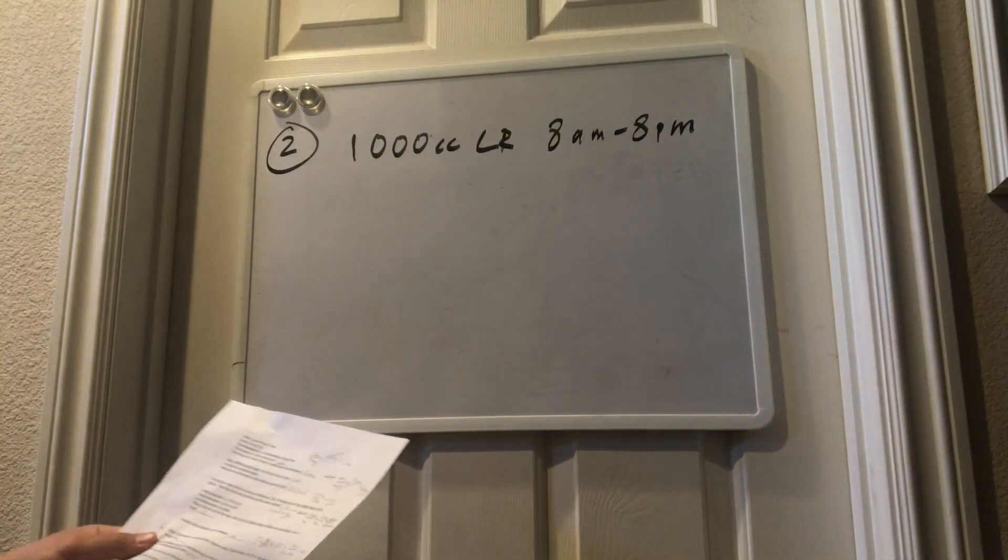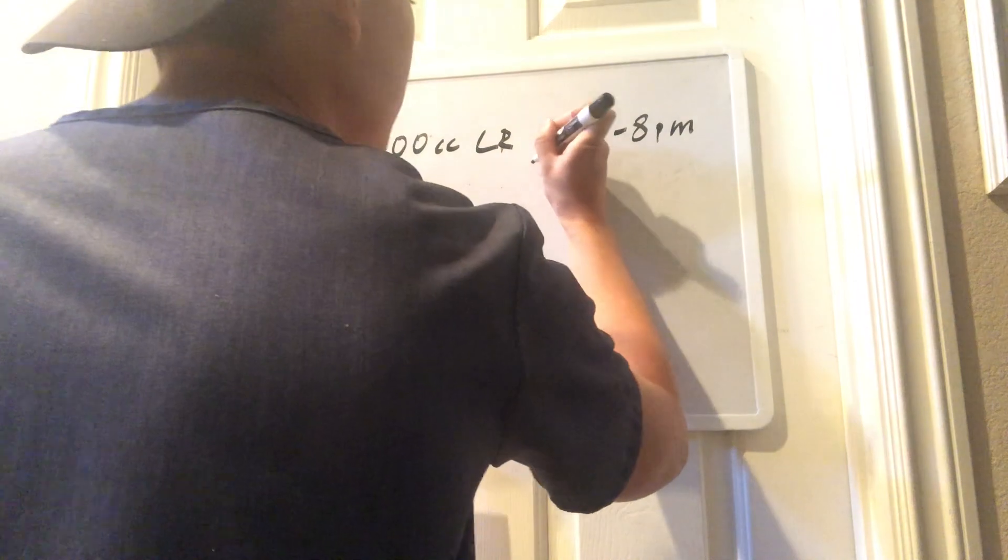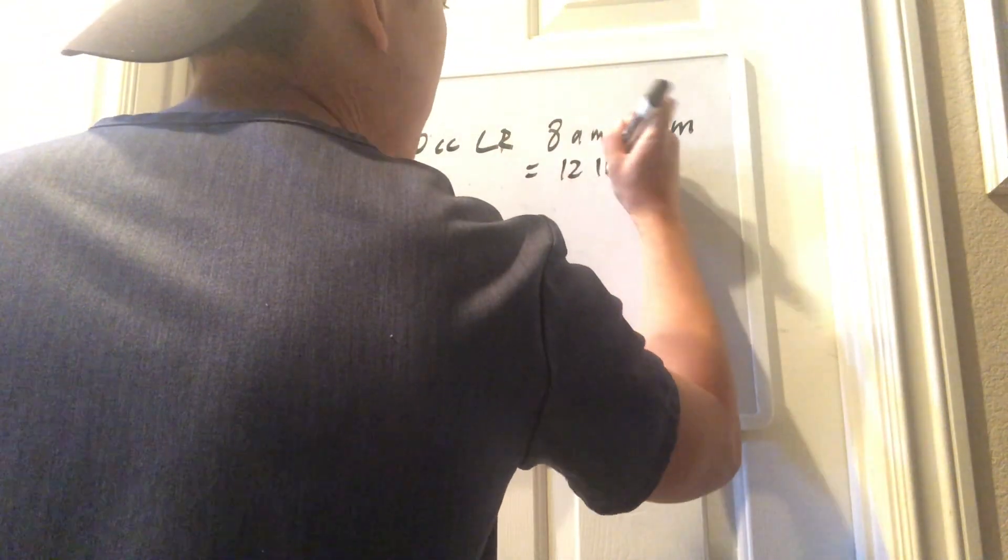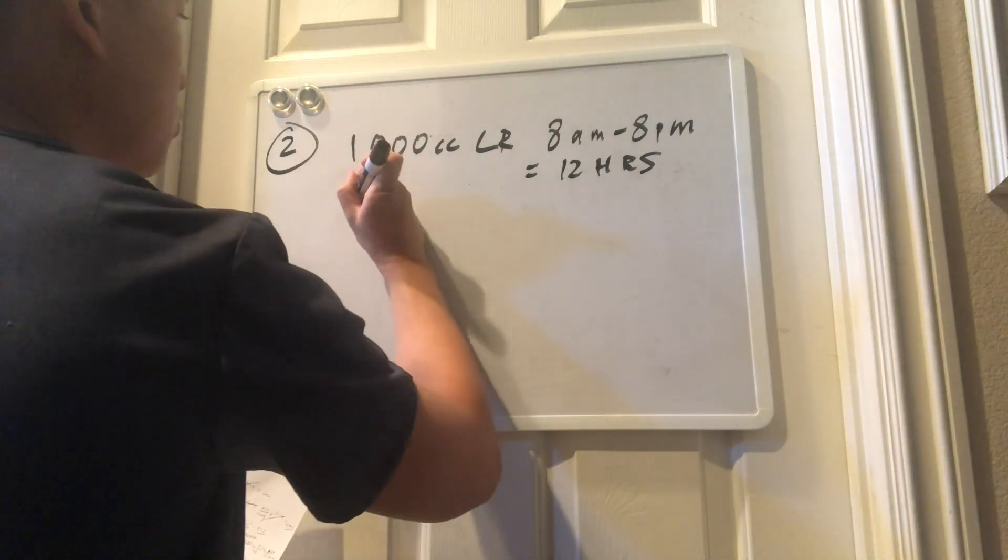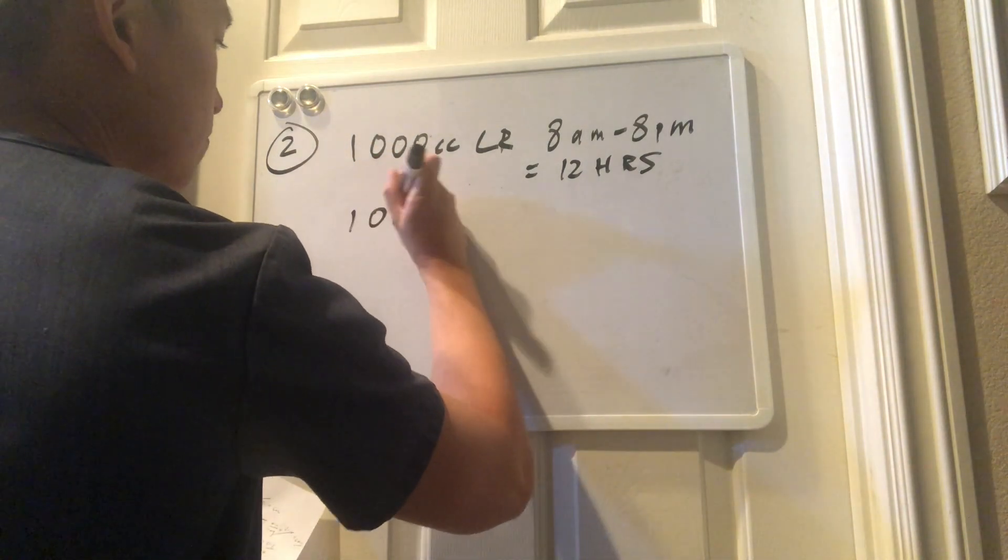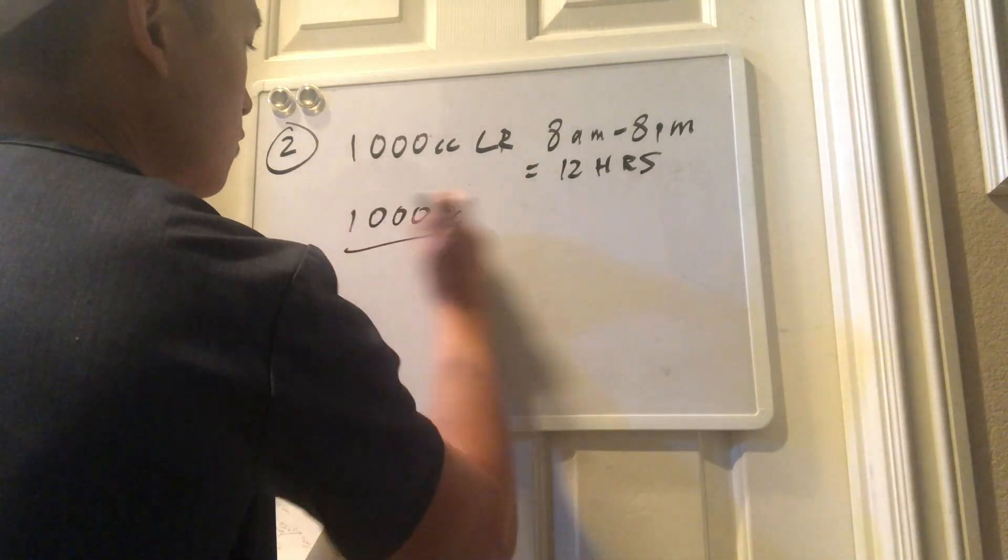Now, here's what we're going to do. We know that 8 a.m. to 8 p.m. is equivalent to 12 hours. So, all you really have to do is take the 1,000 cc's over 12 hours,